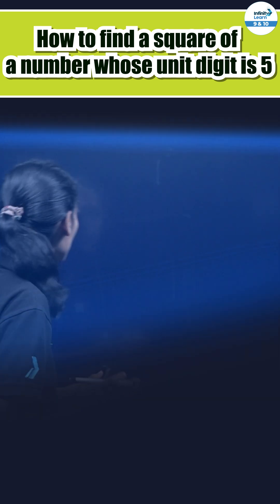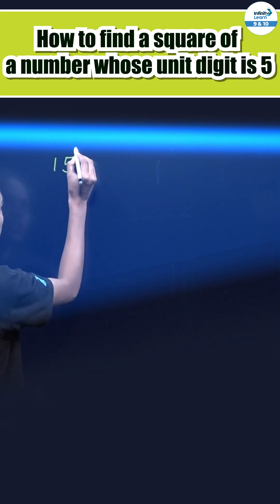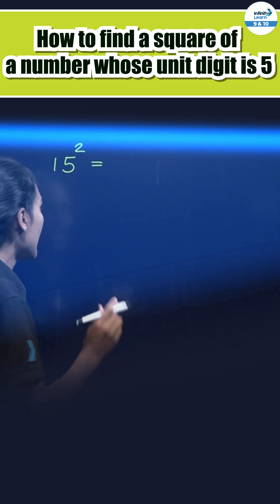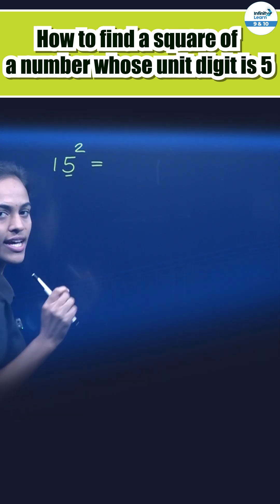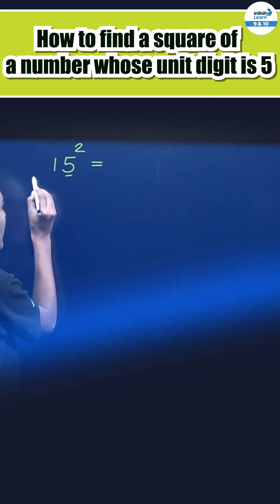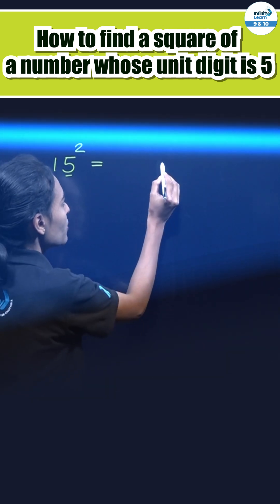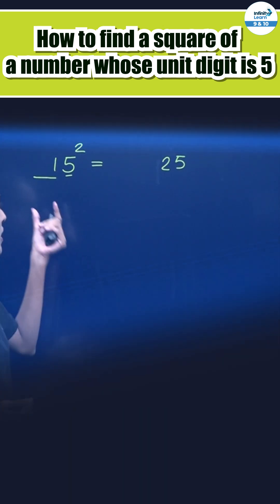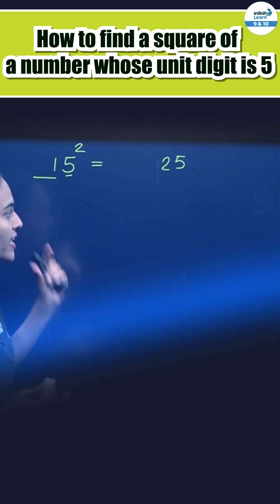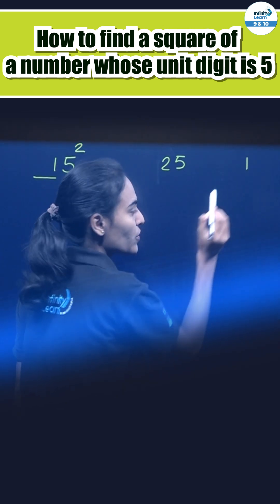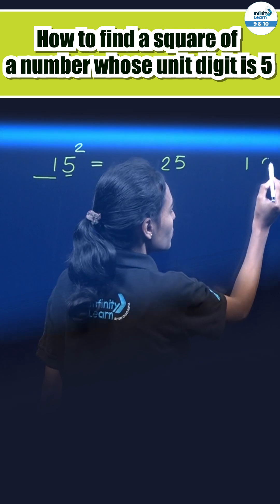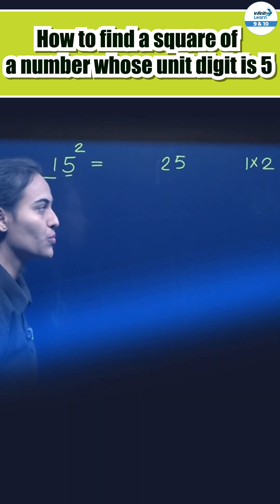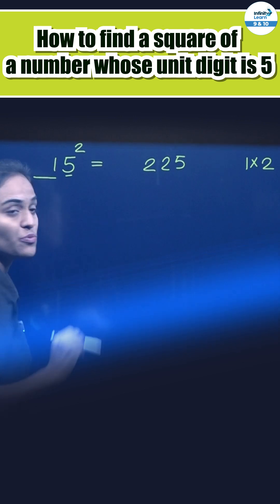So suppose students, if we have a number 15 and we are finding square of 15, then first split this number. In a way, 5 as one group and remaining other digits as one group. First here, write 5 square, that is 25. Then take whatever the remaining number is there. Here it is 1 we have, add 1 in it. 1 plus 1, 2, and now this multiplication will happen. 2 into 1, 2, right here. This is 15 square.